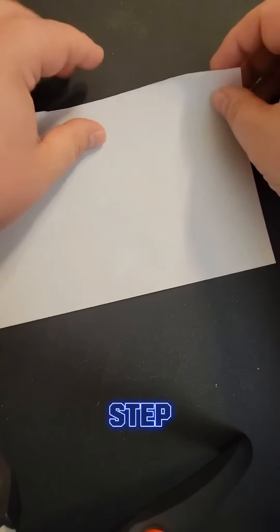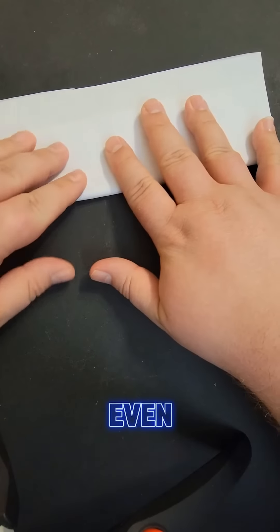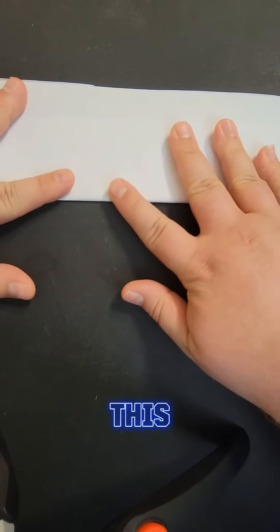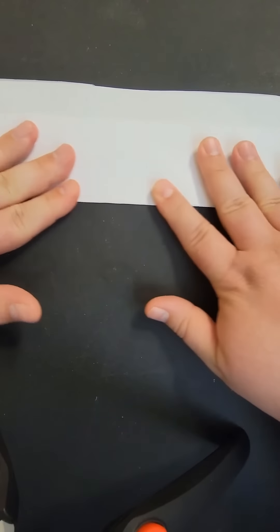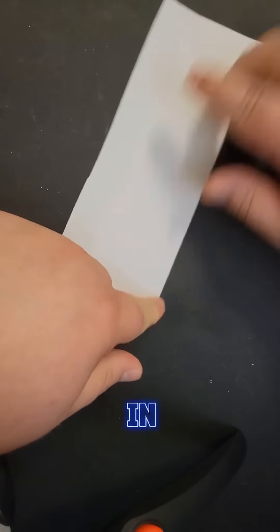I guess this would technically be step three. Find one of the long edges and fold it over but don't make it even with the other side. I'll show this better here in a second but first I'm gonna make sure this first crease is extra crispy. It's been my experience that the stronger the crease the stronger the paper football in the end.